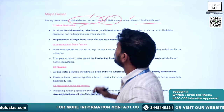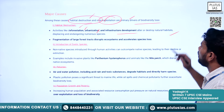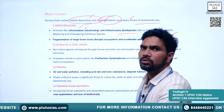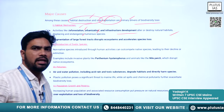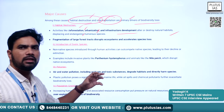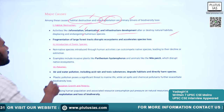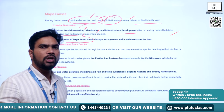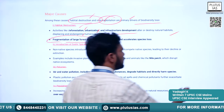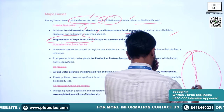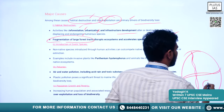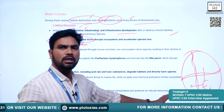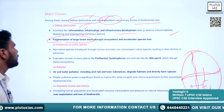Habitat destruction through deforestation, urbanization, and infrastructure development alters or destroys natural landscapes and habitats, displacing and endangering numerous species. Fragmentation of forest tracts — building roads, railway tracks, power lines, and canals through forests — prevents animals from moving freely within their habitat, acting as a major threat to biodiversity survival.